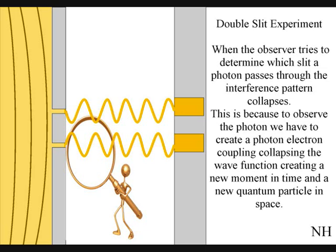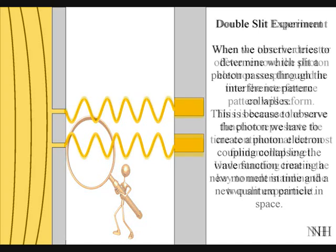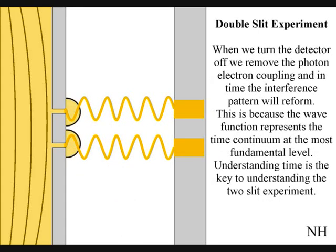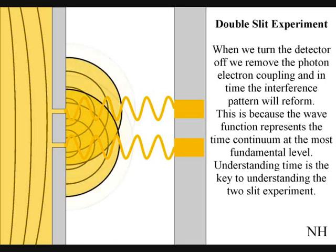This has nothing to do with consciousness. If we turn the detector off, we remove the photon-electron coupling, and in time, the interference pattern will reform.